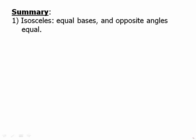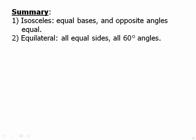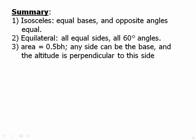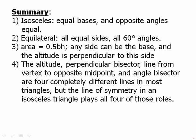In summary: isosceles means two equal sides, and opposite angles are equal — and it goes both ways. If you know the sides are equal, you can prove the opposite angles are equal; if you know the angles are equal, you can prove the opposite sides are equal. Equilateral has three equal sides and all 60-degree angles. Area equals one-half base times height, but any side can be the base and the altitude is perpendicular to that side — base and height have nothing to do with being horizontal or vertical. The altitude, perpendicular bisector, median, and angle bisector are four completely different lines in most triangles, but the line of symmetry in an isosceles triangle plays all four roles at once.